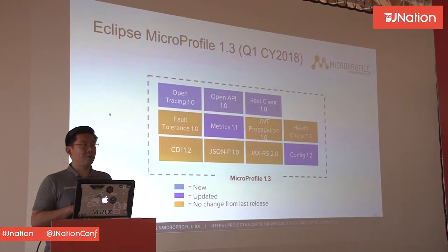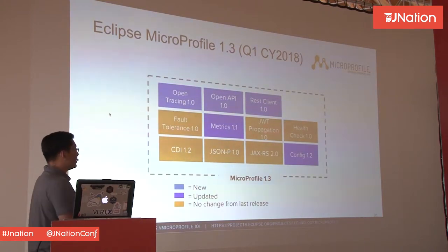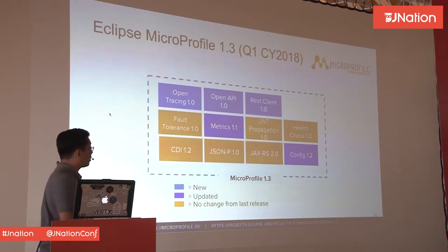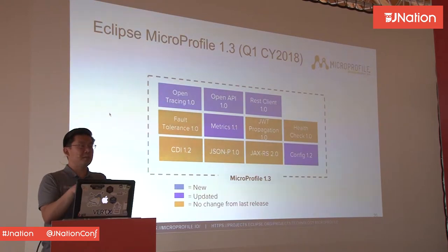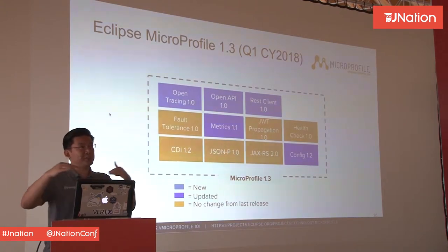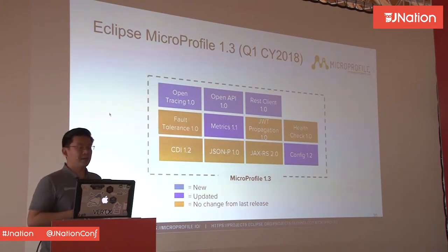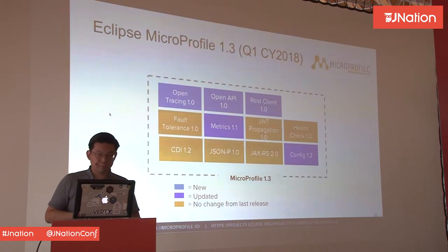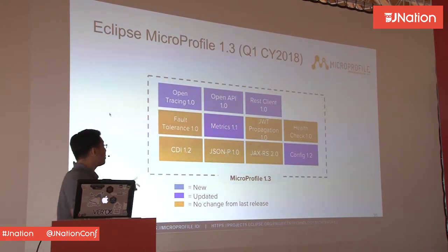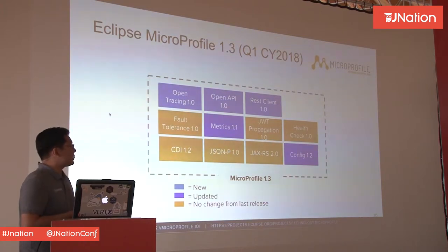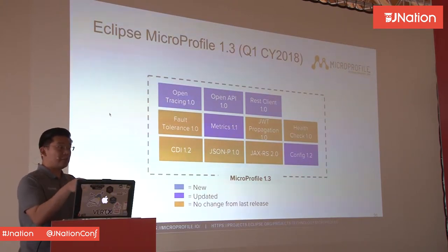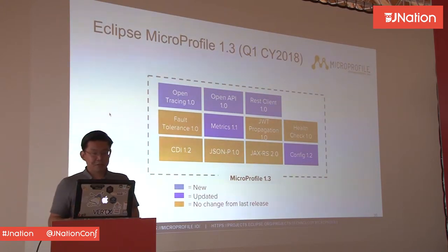MicroProfile 1.3 is the current release, released in the first quarter of this year. We added support for OpenTracing — if you're thinking about distributed applications, you need to trace across multiple endpoints to establish correlation between stack traces, so we added OpenTracing 1.0 based on Jaeger from Uber. We also provided OpenAPI — the evolution of Swagger — to define your REST API, and a type-safe REST Client API, which is much nicer to use.